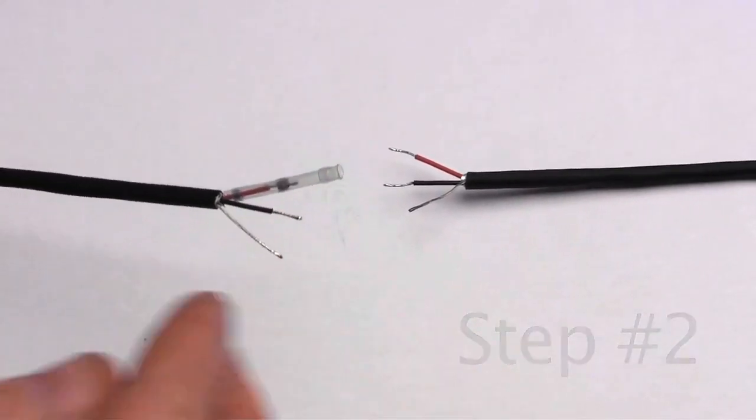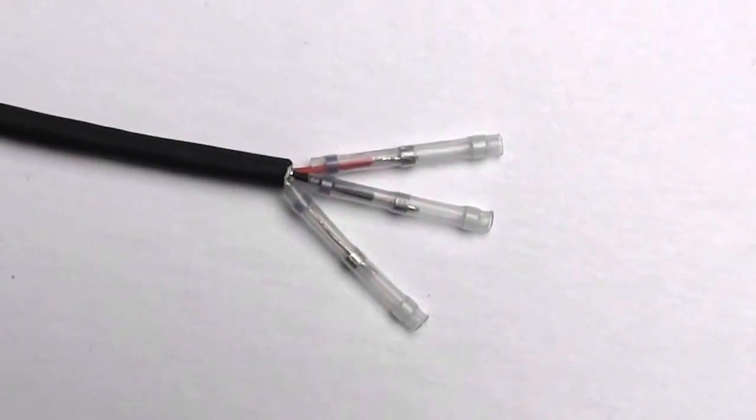Step 2: slide the solder sleeves onto the wires, making sure the tinned ends are inside the solder rings.